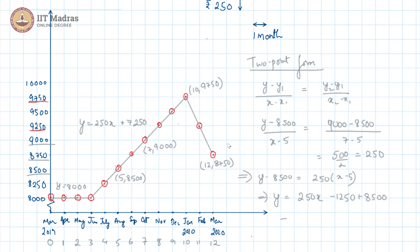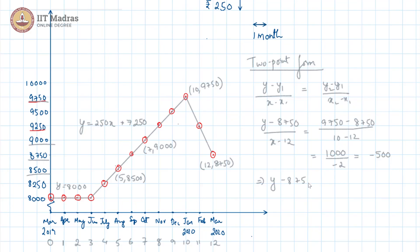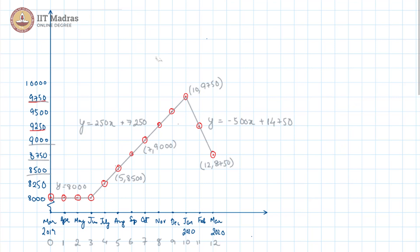We would like to find the line equation for this decreasing segment using the two-point form again. So: y minus 8750 over x minus 12 equals 9750 minus 8750 over 10 minus 12, which gives us 1000 over minus 2 = minus 500. Thus y minus 8750 = minus 500(x minus 12), giving y = minus 500x + 6000 + 8750. This is our new line, and this is a clear graph of the situation.